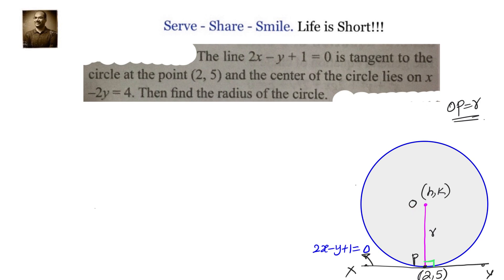We will use two concepts to find the coordinates of the center. First, the distance from the center to any point on the circle equals the radius, so OP equals r. Second, the slope of perpendicular lines has a product of minus 1, and the point h comma k lies on the line x minus 2y equals 4.